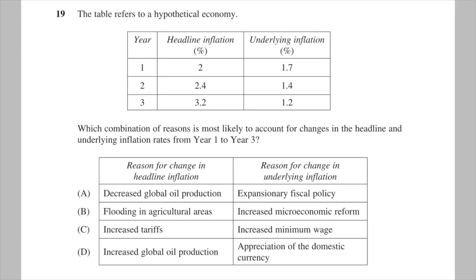Let's take a look at 2015's question 19. In this question, we're given headline and underlying inflation stats, and we must figure out which combination of scenarios would cause this to happen. A falling underlying inflation rate and rising headline inflation suggests that prices are generally falling, but volatile or one-off events are causing certain items to increase in prices.